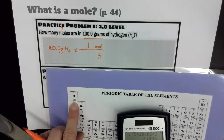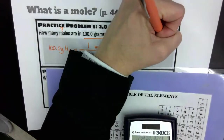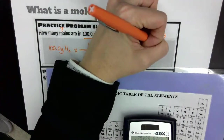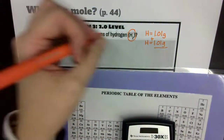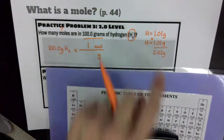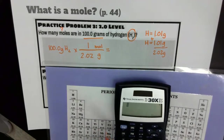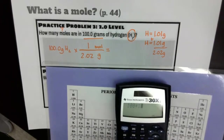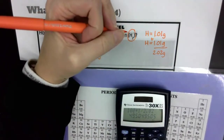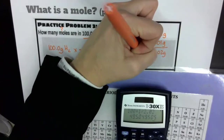Hydrogen is right here on the periodic table, and its mass is 1.008, so I call it 1.01. Hydrogen has a mass of 1.01 grams per mole, but this is H₂, which means we have two hydrogens, so I do hydrogen again. My mass comes out to 2.02 grams — one mole of H₂ is 2.02 grams. Typing 100 times 1 divided by 2.02 and hitting enter, I get 49.5 moles of H₂.